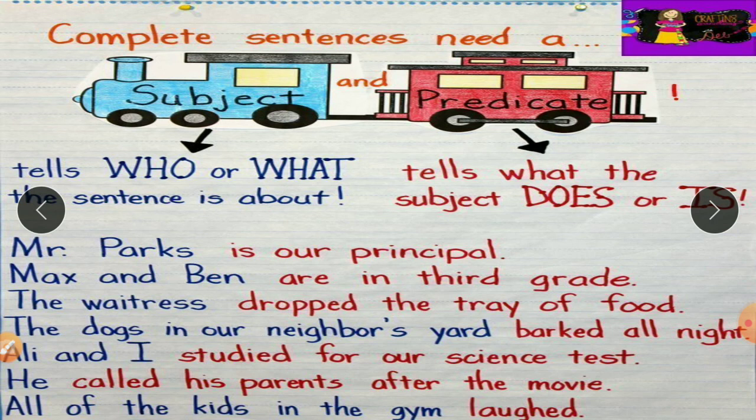Example: 'Mr. Parks is our principal.' Whom we are talking about here? Mr. Parks — so that is the subject. What are we talking about? 'Is our principal' — so that is the predicate. Second example: 'Max and Ben are in third grade.' Whom we are talking about? Max and Ben — they are the subject. What we are talking about them — 'are in third grade' — that is the predicate.